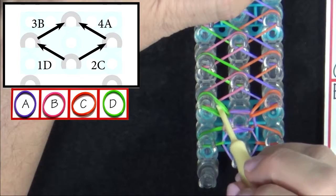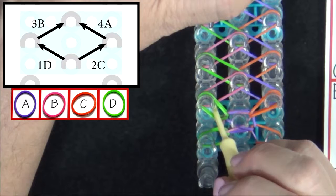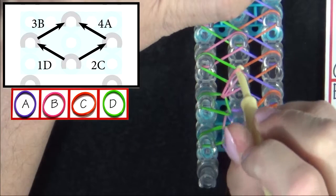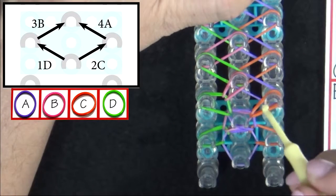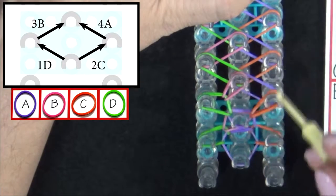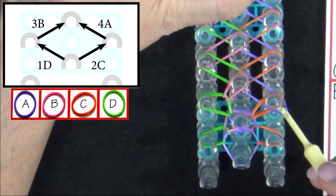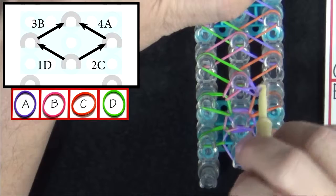3B. You can reach into the point of that teardrop. Pull that band back. Grab your B band and pull it to the center. Band 4A. Again you can reach in here. Pull that band back. Grab your A band and pull it to the center.